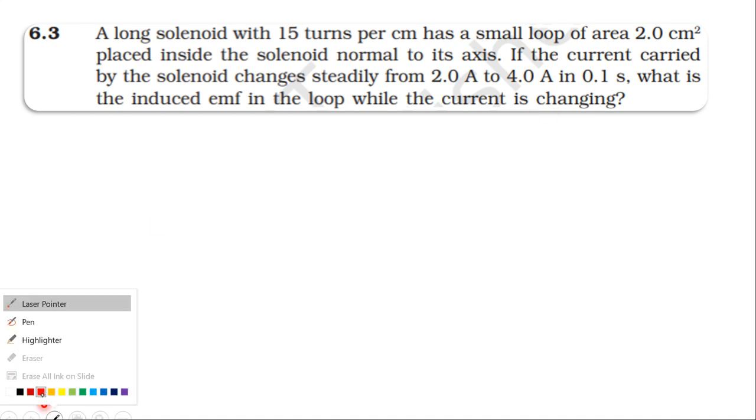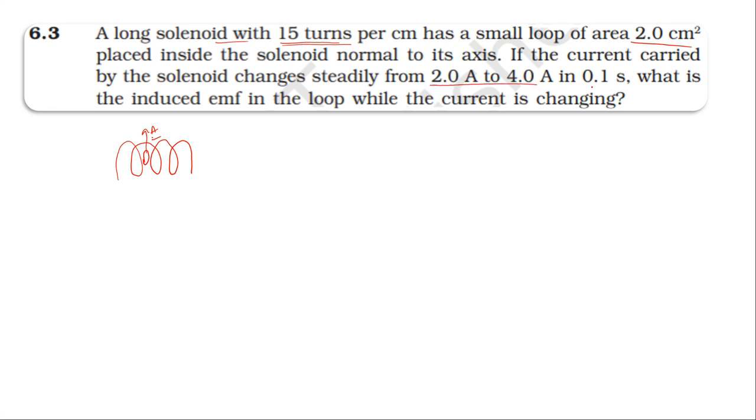So we have a solenoid, and inside the solenoid there's a loop. The area of the loop is 2 centimeter square. The solenoid has 15 turns per centimeter, which is the number of turns per length. The current changes from 2 ampere to 4 ampere in 0.1 second. We need to find the induced EMF.